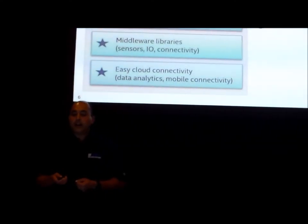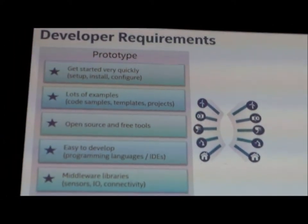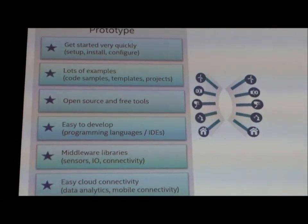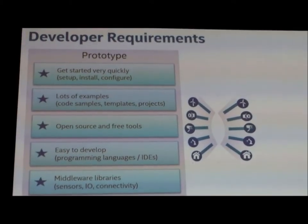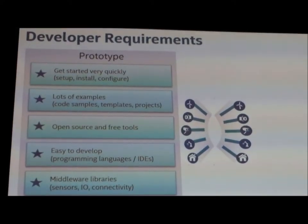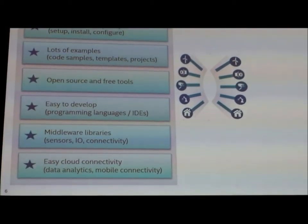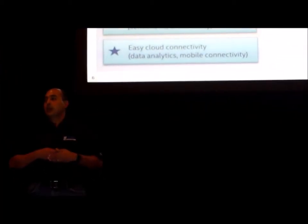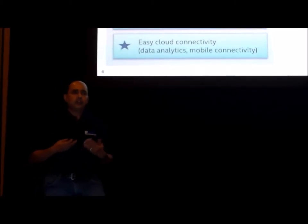The reason why is simple: when you're doing a prototype, there are certain things that really matter. You want to start very quickly, you don't want to spend a lot of time learning stuff, and you want to start with lots of examples and code samples. There's a lot of code samples out there in the maker community and that's why the do-it-yourself movement is so popular — people use existing solutions and evolve them. They're looking for open source and free tools.